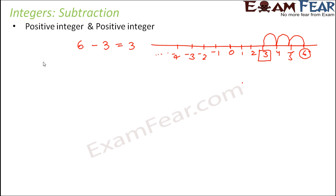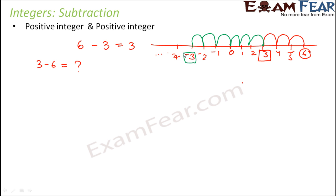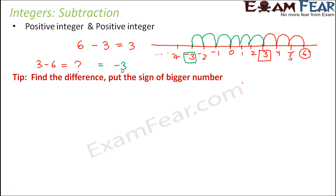Now let us consider the vice versa scenario: what would be 3 minus 6? Here also we have two positive integers and we perform subtraction between them. We start the jumps from 3 and make 6 jumps towards the left, reaching at minus 3. So we observe that subtracting two positive integers sometimes gives a positive result and sometimes a negative result.